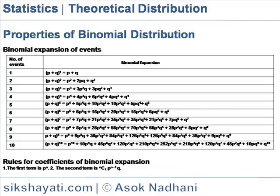Binomial expansion events. The table shows the number of events and the corresponding binomial expansion. Rules for coefficient of binomial expansion: the first term is p to the power n. The second term is nC1 times p to the power (n minus 1) into q. In each successive term, the power of p is reduced by 1 and the power of q is increased by 1. The coefficient of any term is found by multiplying the coefficient of the preceding term by the power of p, and dividing the product so obtained by 1 more than the power of q in that preceding term.